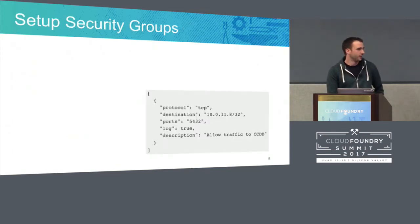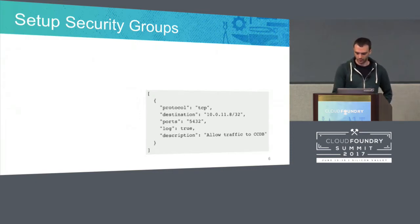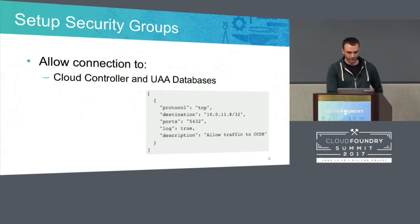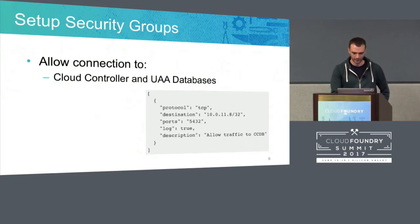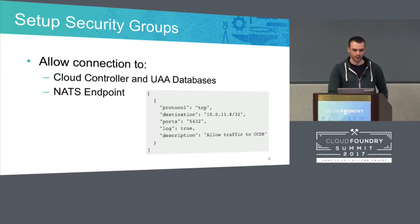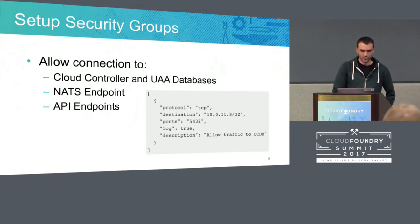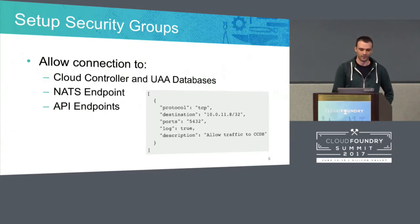Let's start with security groups. What do we need to run the Admin UI on a Cloud Foundry space? We need a special security group to allow connections to the Cloud Foundry Cloud Controller and UAA databases, to get information about orgs, spaces, and more. We need to connect to the NATS endpoints, meaning the private IPs of the NATS VMs in your Cloud Foundry deployment. We also need to connect to the API endpoints — specifically the internal IPs of the API virtual machines, not the public ones exposed by the load balancer.